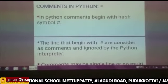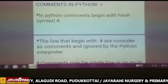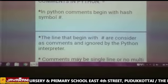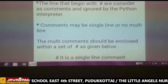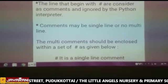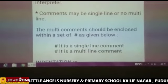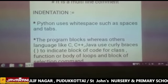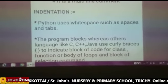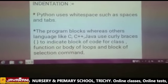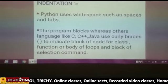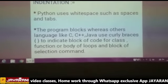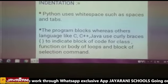Comments in Python: the symbols we use are hash (#). Any line that begins with a hash is considered a comment and ignored by Python. A comment may be a single line or multiple lines. Multiple-line comments should be enclosed within a set of hash symbols. Indentation means it uses whitespace such as spaces and tabs to define program blocks, whereas other languages like C, C++, and Java use curly braces to indicate a block of code for a class, function, or body of loops and selection statements.